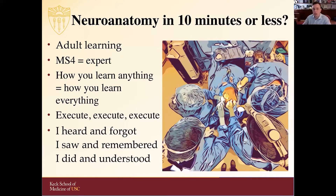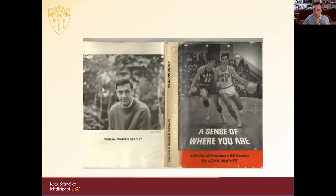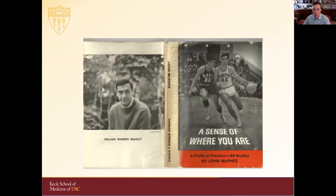How you learn anything is how you learn everything. You'll learn what works best for you — whether it's flashcards, writing, drawing, reading, listening, or doing — and those things will carry through the rest of your life. One saying I found very important: 'I heard and I forgot, I saw and I remembered, I did and I understood.' A lot of neurosurgery and neuroanatomical learning is learning by doing. This is one of my favorite books, A Sense of Where You Are by John McPhee, about Senator Bill Bradley's basketball career. He was known for the ability to not look at the basket and shoot or pass with extreme accuracy. Developing a neuroanatomical sense requires those same skills — you have to know where you are almost without looking, and perceive things you can't even directly see.